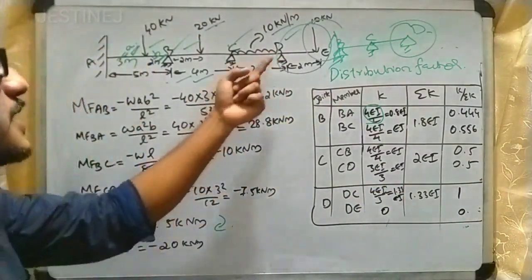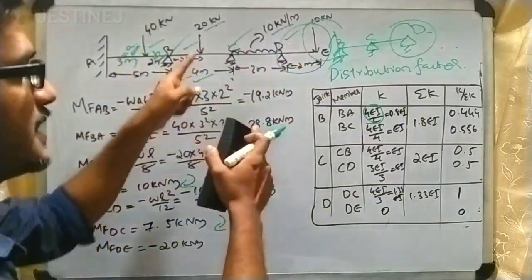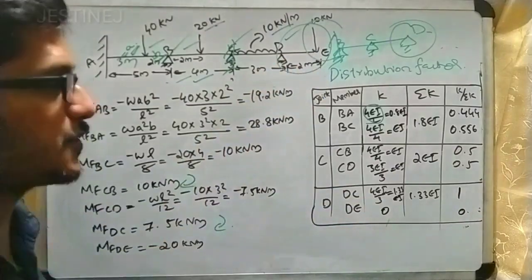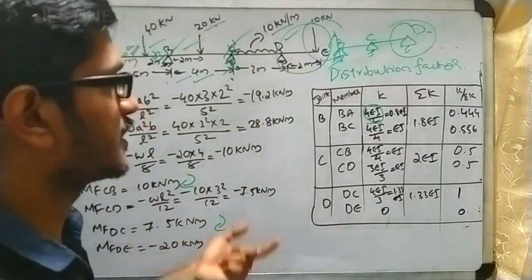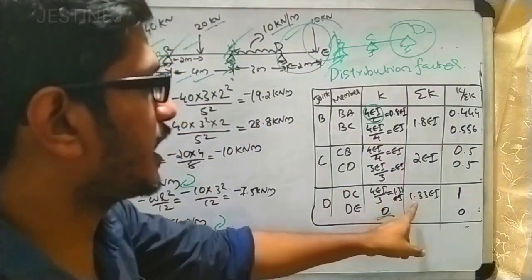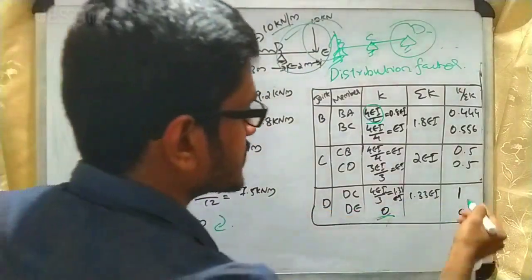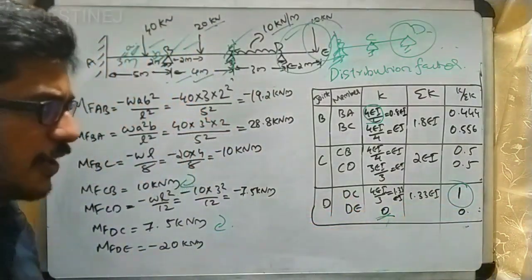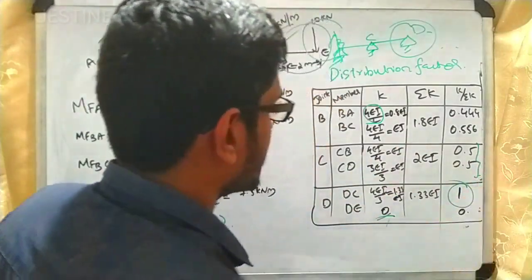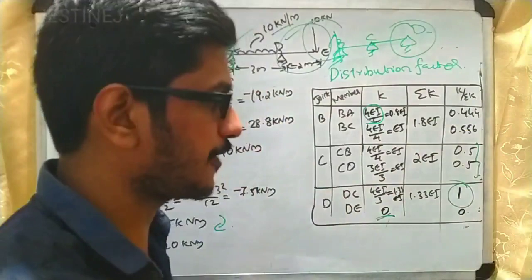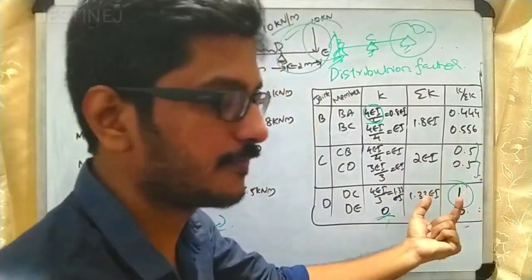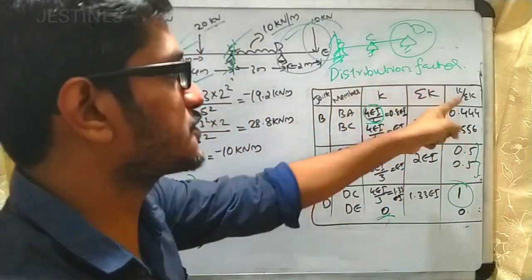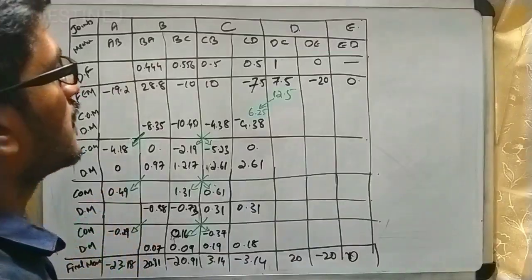For joint D, connected to members DC and DE: since C is an intermediate support (treated as fixed), K_DC = 4EI/L = 1.33EI. The DE portion is an overhang with no stiffness, so K_DE = 0. Therefore ΣK = 1.33EI, DF_DC = 1, and DF_DE = 0. Note that at any joint, the sum of all distribution factors must equal unity.